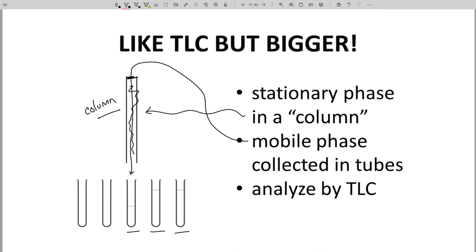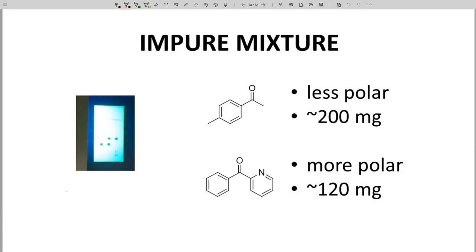You can see what is in each fraction by running a TLC. Here on the left is an image of the TLC plate of an impure mixture. The two components are shown to the right. The top compound is less polar, and it corresponds to the top spot. The bottom compound is more polar, and it corresponds to the lower spot.